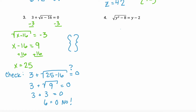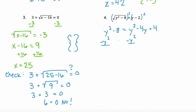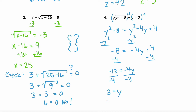How about example 4? Step 1 is already done for us — our radical is isolated. So we need to square both sides. Notice, when we square the left, we end up with the radicand. On the right, we're squaring a binomial, so we're going to end up with a perfect square trinomial: y squared minus 4y plus 4. Let's subtract y squared from both sides and combine like terms. We get negative 8 equals negative 4y plus 4. Subtract 4 from both sides — negative 12 equals negative 4y. Divide by negative 4, and we get y equals 3.